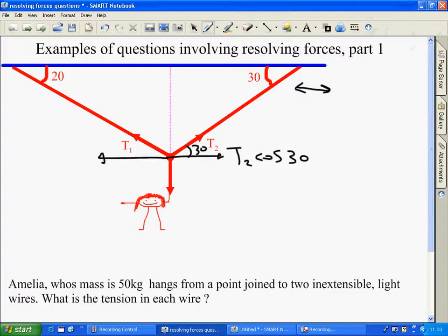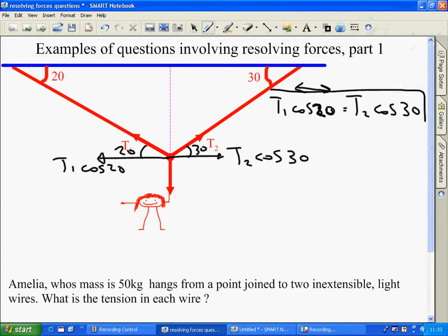Here, this is 20, so this component is T1 cos 20. So we know that T1 cos 20 equals T2 cos 30. So we have one equation involving T1 and T2.